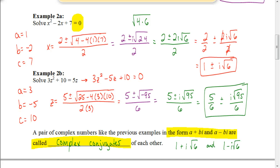This idea of complex conjugates will be used in a little bit. A complex conjugate is what we got in the first example: 1 plus or minus i√6. You can break that into two pieces — 1 plus i√6 and 1 minus i√6 — and those are called complex conjugates. We'll see in the third video how complex conjugates are used when dividing two complex numbers.